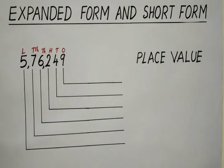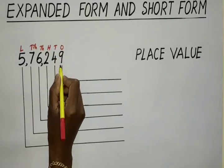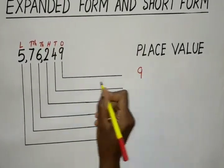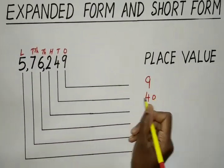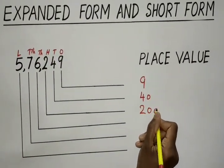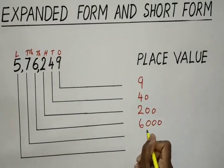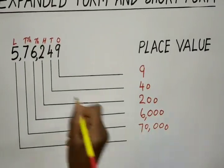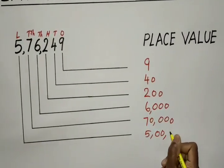We know place value depends on the place where it is. So this 9 is in the place of 1's, so place value is 9. Place value of 4: 4 tens are 40. Place value of 2: 2 is in the place of 100's, so that is 200. Then 6,000; 70,000; and 5 is in the place of lakh, so its place value is 5,000,000.